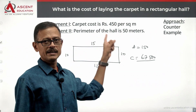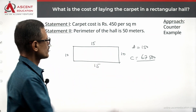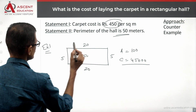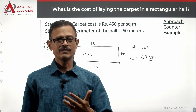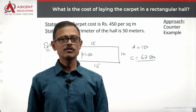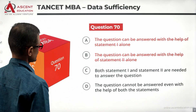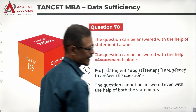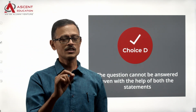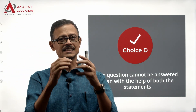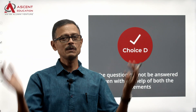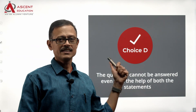The cost per square meter is 450 in both cases, and the perimeter of both rectangles is 50. Yet the costs differ. With only the perimeter, we cannot determine the area — multiple rectangles can have the same perimeter. So even combining the two statements does not give us a unique answer. The given data is not sufficient, and Choice D is the answer to this question.